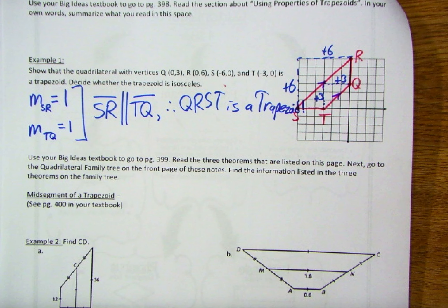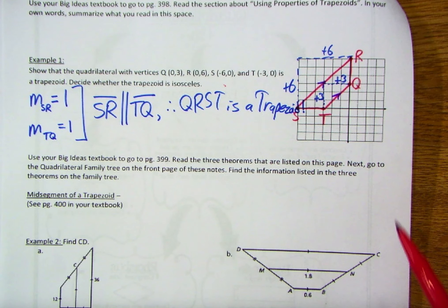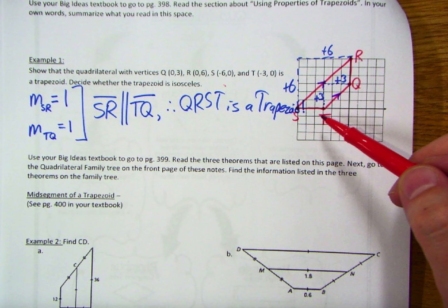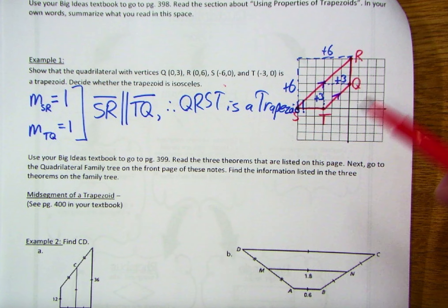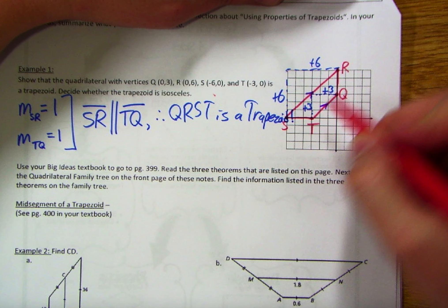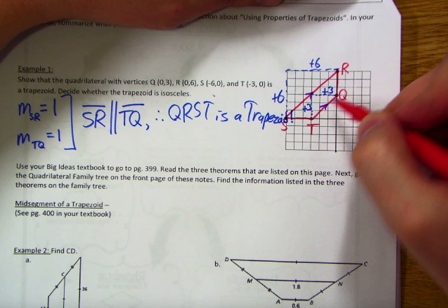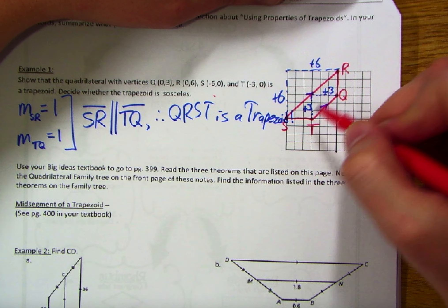Now for the second part — deciding whether the trapezoid is isosceles. Isosceles trapezoids have congruent legs, not bases. If the bases were congruent, that creates a second pair of parallel sides, making it a parallelogram. Since the legs ST and RQ are lined up on verticals and horizontals, we can just count across to find their lengths.